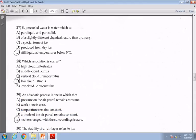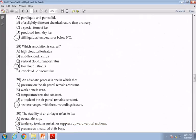Twenty-seven, supercooled water is E, still liquid at temperatures cooler than zero Celsius. Question twenty-eight, which of these is correct? It's correct, D, to say that low clouds are stratus. An example of a low cloud is a stratus cloud. Question twenty-nine, the adiabatic process is one that E, there's no exchange between, in our case, the parcel of air and the surrounding. That's the best answer for twenty-nine.